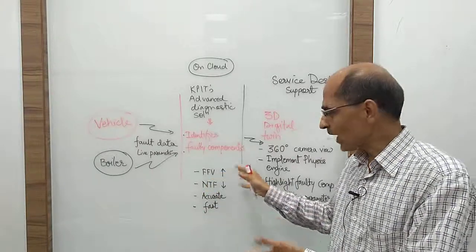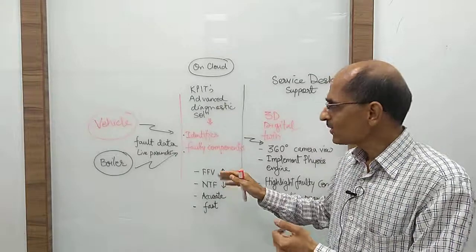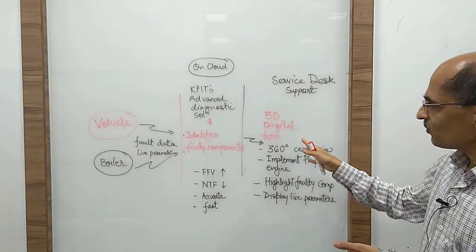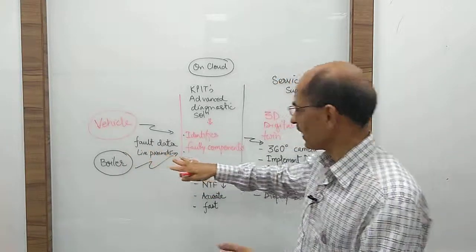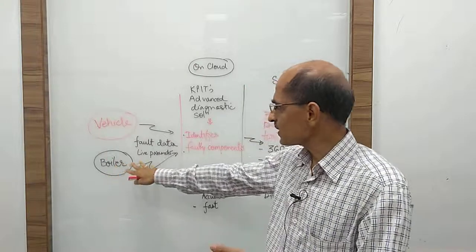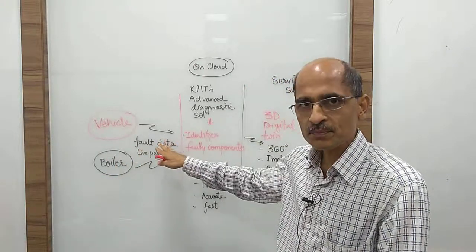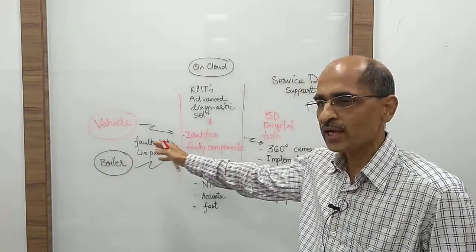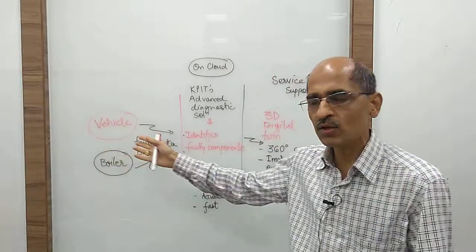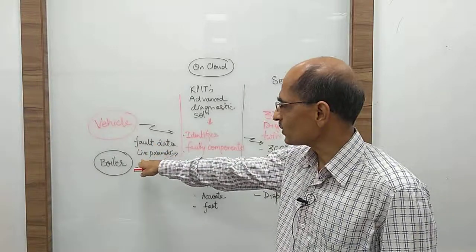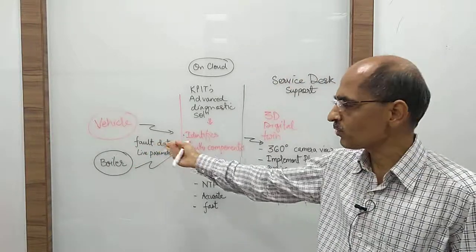Now we want to build this digital twin which, as you see here, we have a vehicle and a boiler as an example. Both these devices provide fault data. Whenever there is a fault in the vehicle or any equipment, you get what we call DTCs, diagnostic trouble codes. So this is fault data.